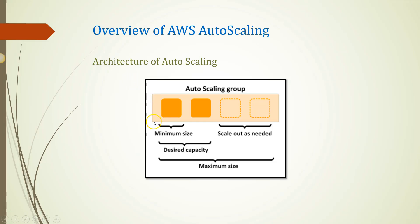Here you can see the maximum size of Autoscaling. We have to set the Autoscaling policy with minimum and maximum instances. The minimum size is one instance and maximum size is four, and there is a desired capacity of two instances. When the number of requests suddenly increases, the Autoscaling group will create one more instance and some requests will be routed to that instance. This is the basic definition and architecture of Autoscaling.